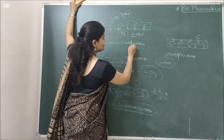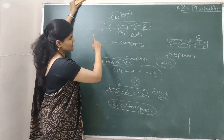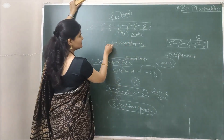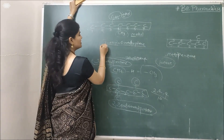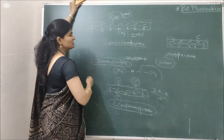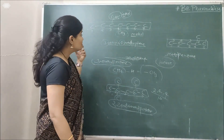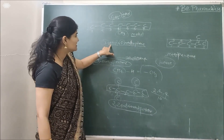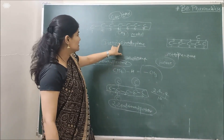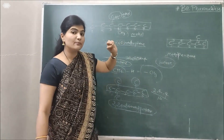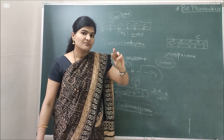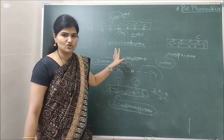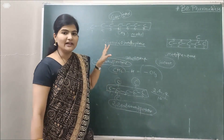So what was done here: first write the parent (7-carbon chain = heptane), then identify the substituents, then write the position numbers for each substituent. Place a hyphen or dash between number and letter, and a comma between two numbers. The name is written as one single word: 3-ethyl-4-methylheptane.